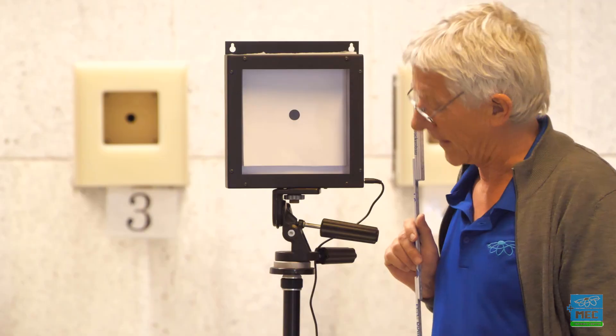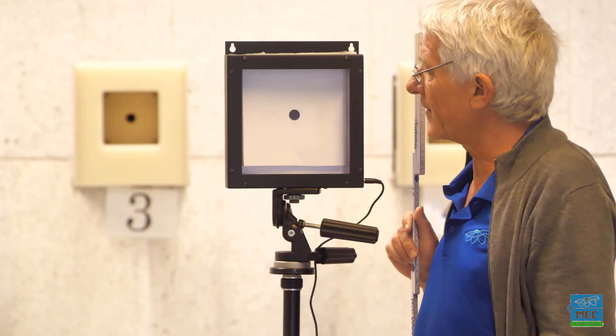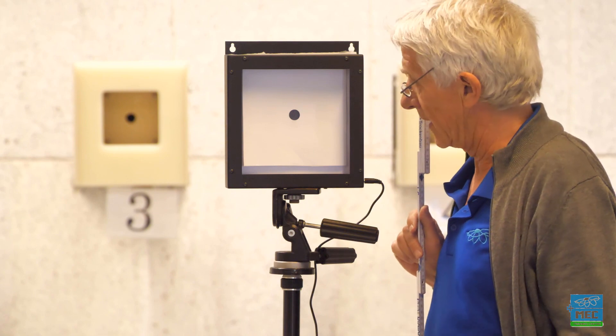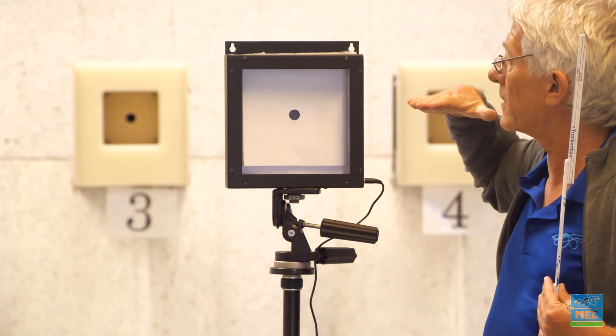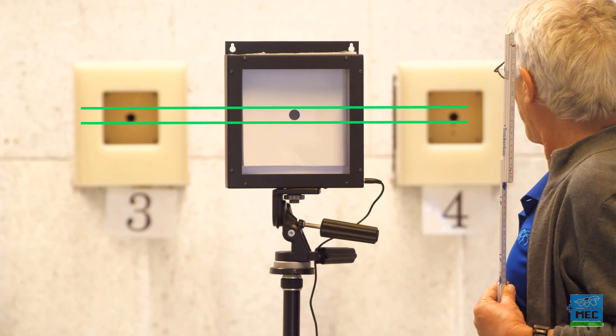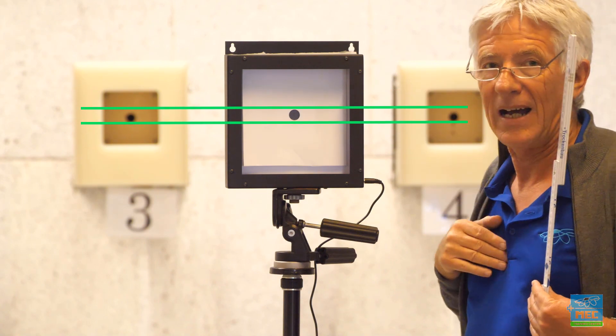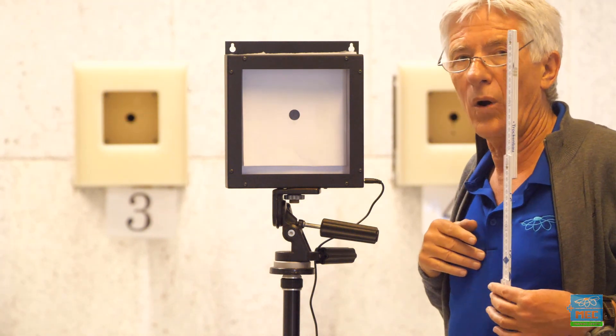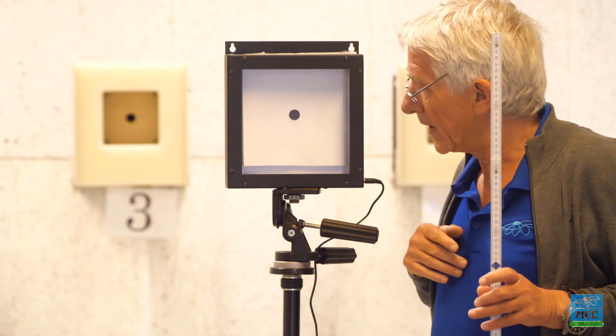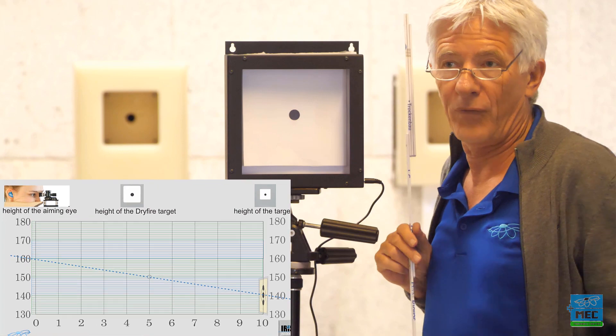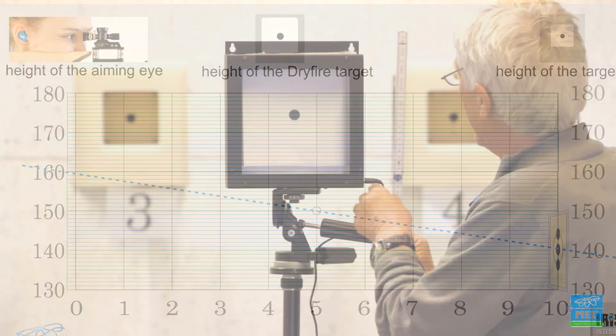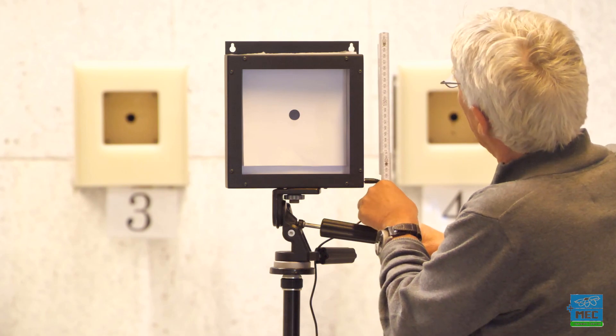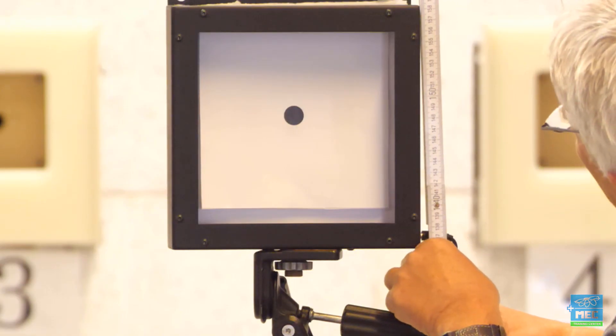The second problem is the height of the target. When you compare the range of the background and the box here, you find that the spots are on the same height. How high this should be, you get from a little formula on my website as well. So here, for example, we have a height of one meter and fifty.